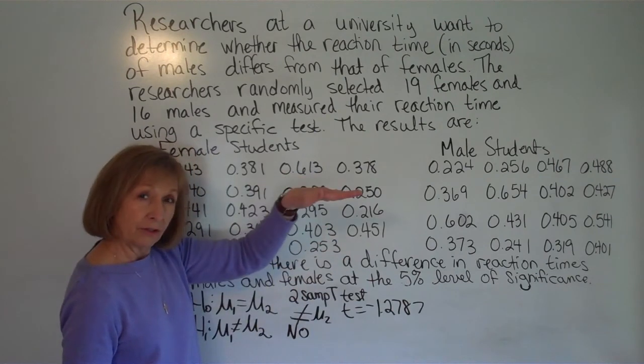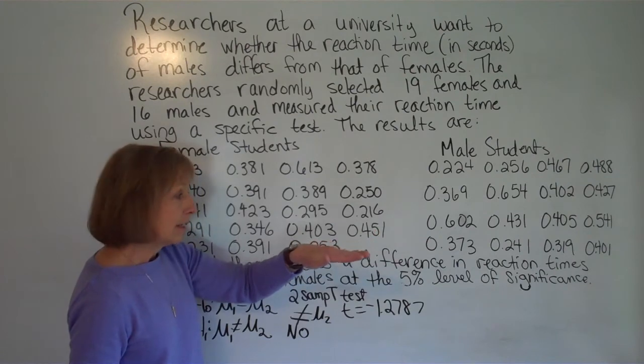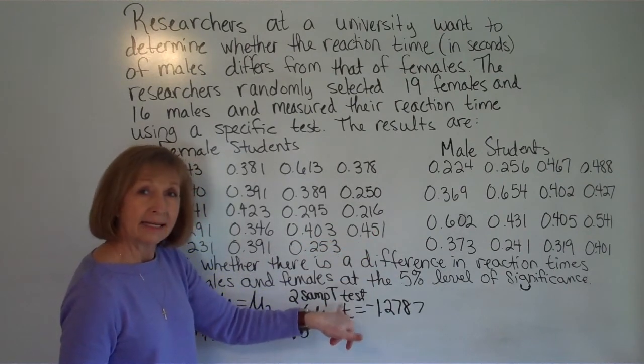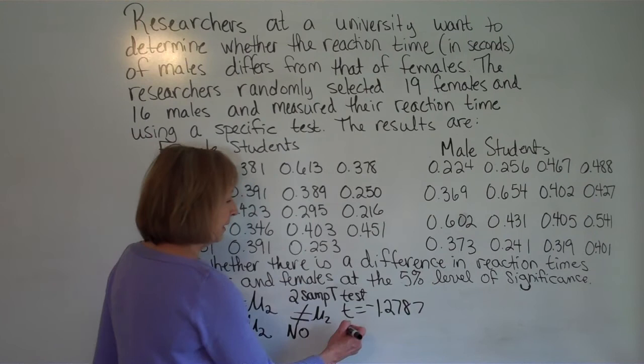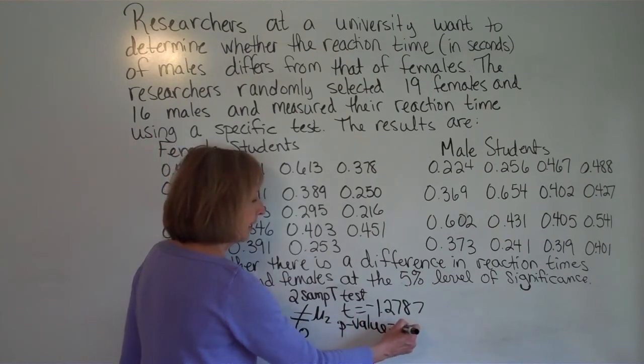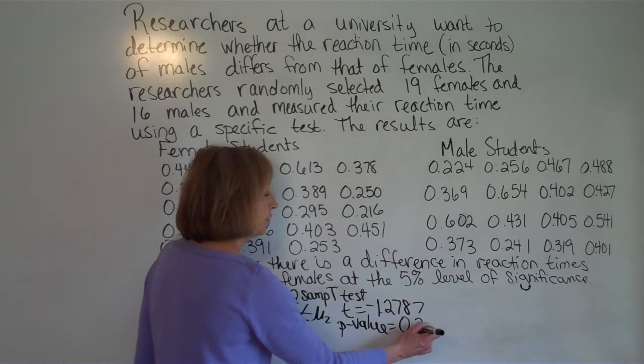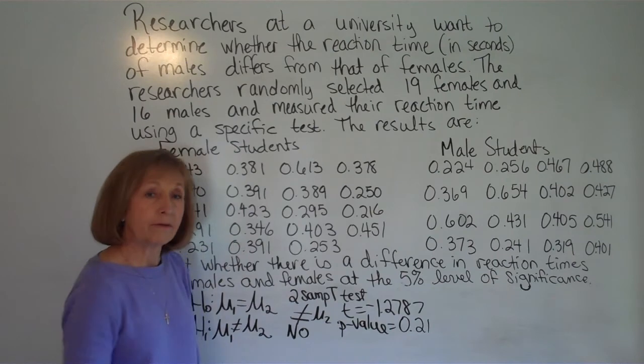So right under it gets your alternate hypothesis then it gives you your t equal for the test statistic t for this case because we did the t test. And then it says p which is the p value. And for this particular question comes up as 0.2114.